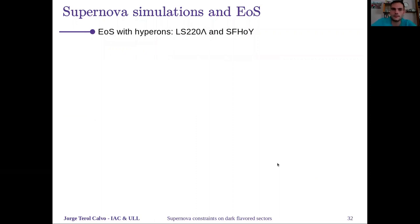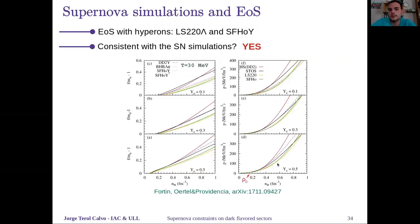Of course, these equations of state do not include hyperons, but this is not a problem because these equations of state have some extensions with hyperons—the LS220 Lambda and the SFHO Y. Is it consistent to use these equations of state while we have simulations without hyperons? In principle, yes, because for the relevant quantities, it has been shown in the literature that there is not much difference within these equations of state with or without hyperons, unless you get to densities much higher than those reached in proto neutron stars. One important thing to note is that the equation of state of Lattimer Swesty with hyperons does not reproduce the neutron star observations and constraints. We won't use this result as our final result, but we have calculated it as well just to know that our procedure works.